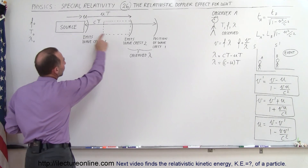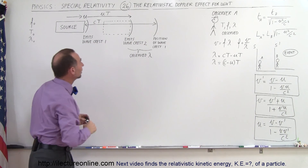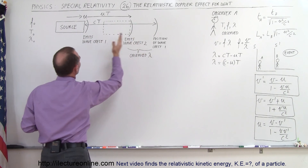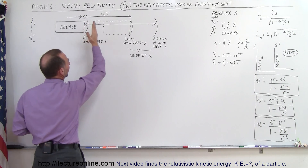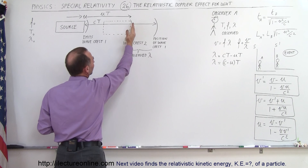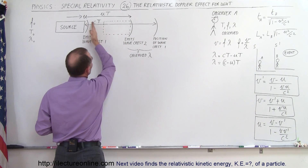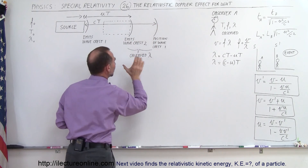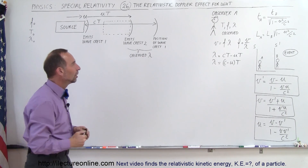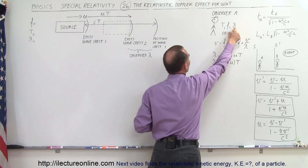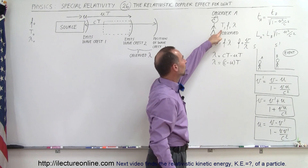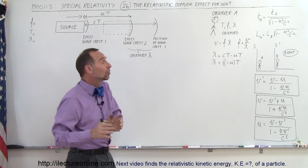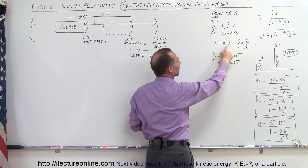The source is moving towards the observer at velocity u with respect to the observer. When the object puts out wave crests — here's the emission of the first wave crest — by the time it puts out the second wave crest, the object has moved to a new location. But the first wave crest has moved at the speed of light to another position. So the distance between where the first wave crest is versus where the second wave crest is will be the observed wavelength λ. We use T, f, and λ without the subscript naught to indicate the period, frequency, and wavelength as observed by the stationary observer.